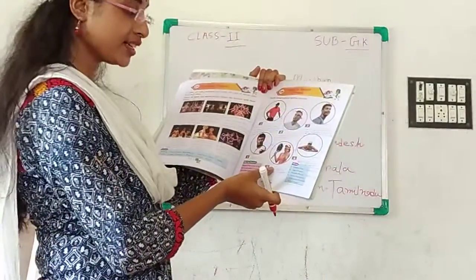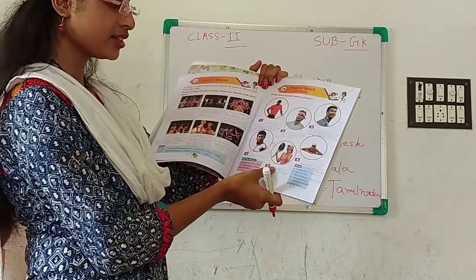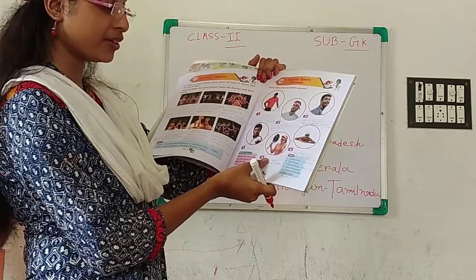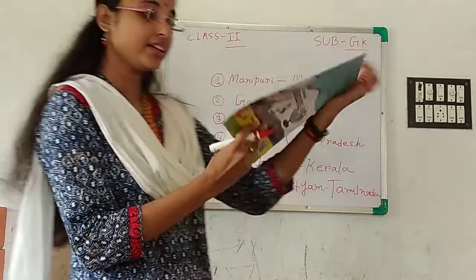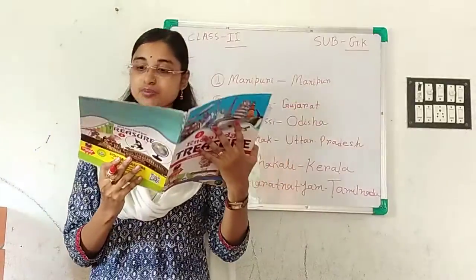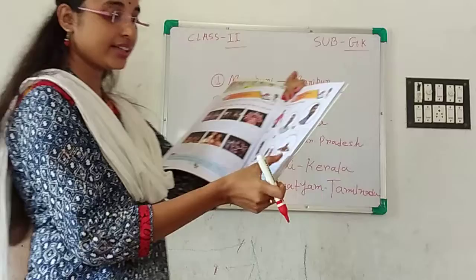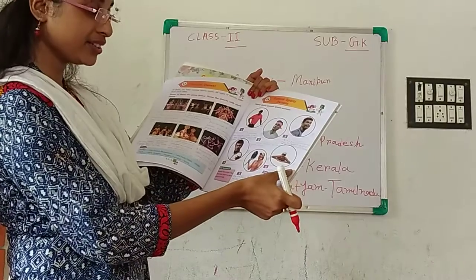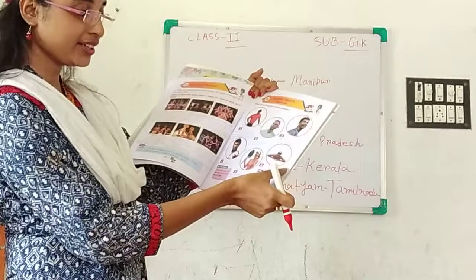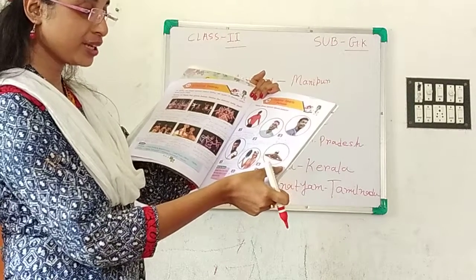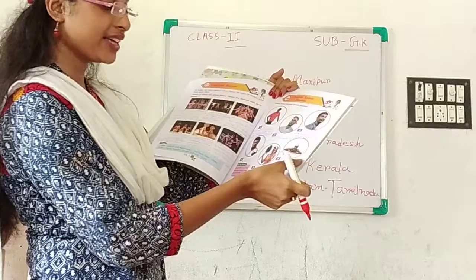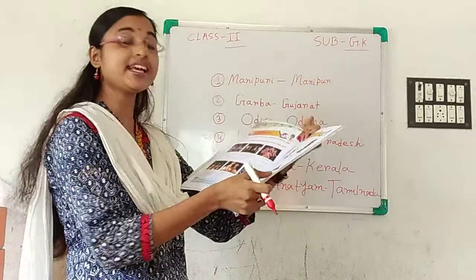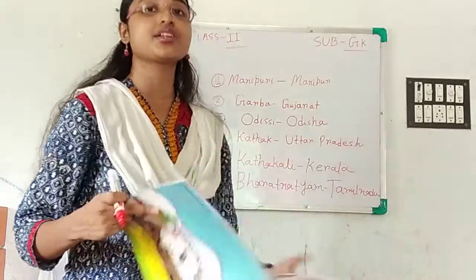Next, number 5, who is she? Maria Sharapova. She is a professional tennis player. Next, number 6, who is he? Can you tell me? Michael Phelps — M-I-C-H-A-E-L P-H-E-L-P-S. Michael Phelps.